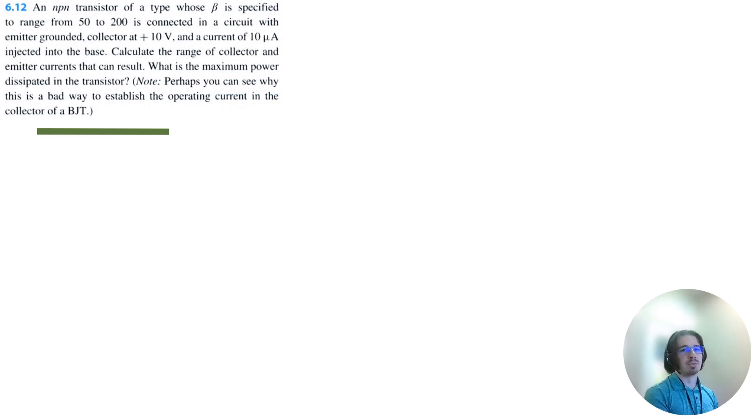Let's solve Problem 6.12 for Microelectronics Circuits 8th Edition by Sedra and Smith. We have an NPN transistor of a type whose beta is specified to range from 50 to 200. It's connected in a circuit with the emitter grounded, collector at positive 10 volts, and a current of 10 microamps injected into the base.